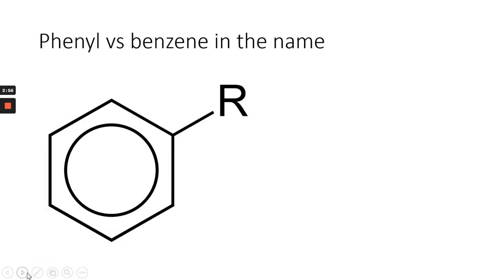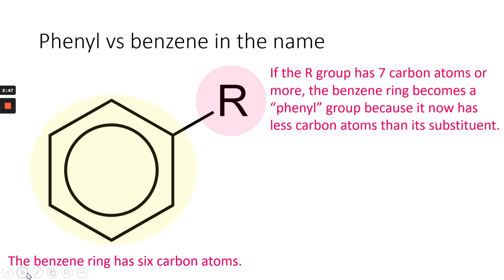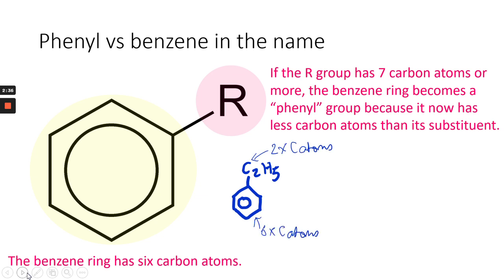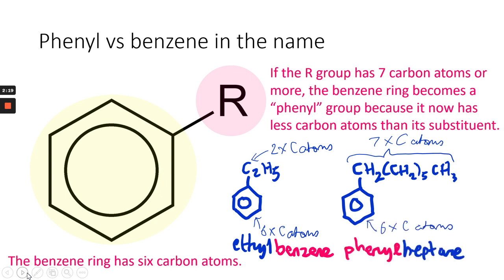When you have phenyl versus benzene in the name — looking at the benzene ring, we have 6 carbons present. If the R group has 7 or more carbons in it, then the benzene ring becomes a phenyl group. Applying this to straightforward alkyl chains: we start with ethylbenzene, which has 2 carbons in the ethyl group and 6 carbons in the benzene ring. The benzene part is at the end of the name, so it's a suffix. However, if we increase the number of carbons in the alkyl chain to 7, this now becomes 7 carbon atoms as opposed to 6, so we call it phenylheptane — the phenyl part goes at the beginning as a prefix.